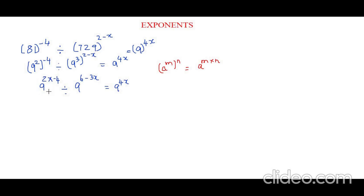So now let's solve: negative 8. So 9 to the power of negative 8 divided by 9 to the power of 6 minus 3x equals 9 to the power of 4x.